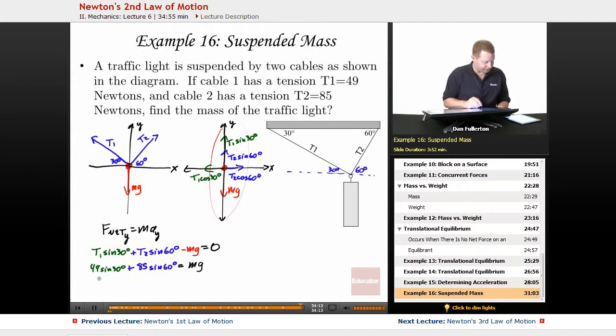Or, 49 sine 30, that's about 24.5, plus 85 sine 60, that's around 73.6, must be equal to mg, which is 9.8 times m. Divide both sides by 9.8, and I come up with a mass of about 10 kilograms.